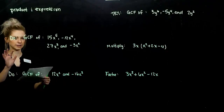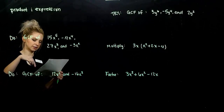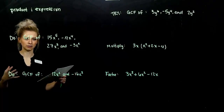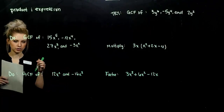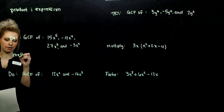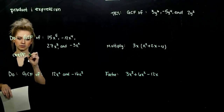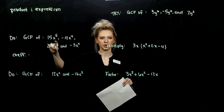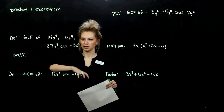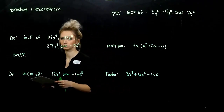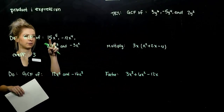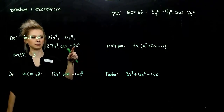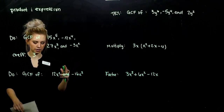First example: we want to find the greatest common factor of these four terms. What do they all share in common that I can take out? We'll look at just the coefficients first — just the numbers out on the front. What is the greatest common factor that I could factor out of all of them? A 3. I could take a 3 out of 15, 3 out of 12, 3 out of 27, 3 out of 3. Anything larger than that, we couldn't take it out of this term.